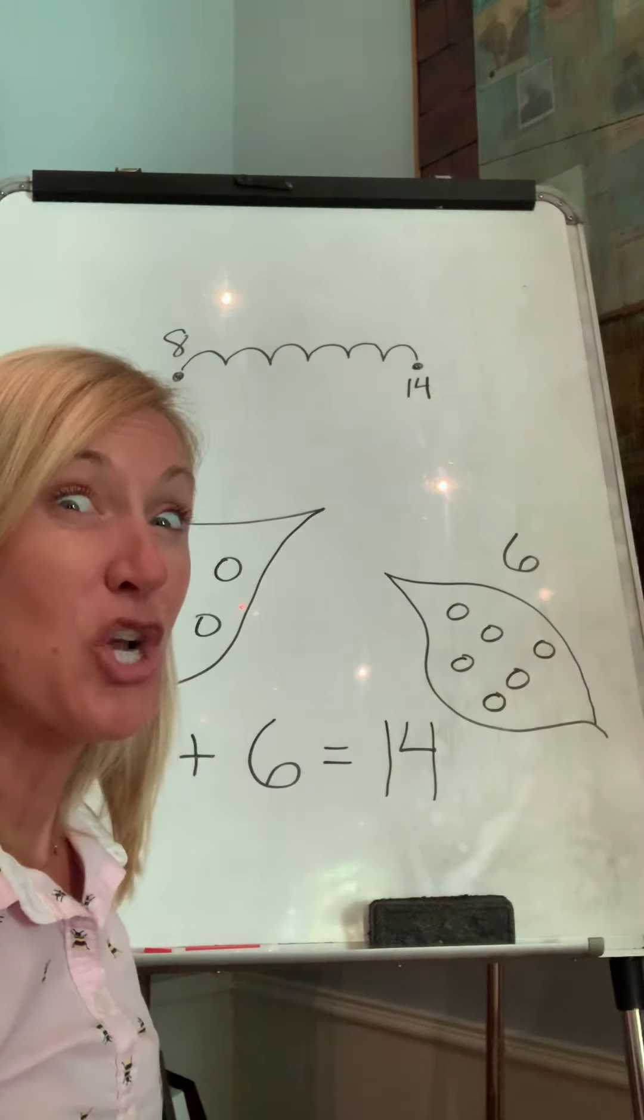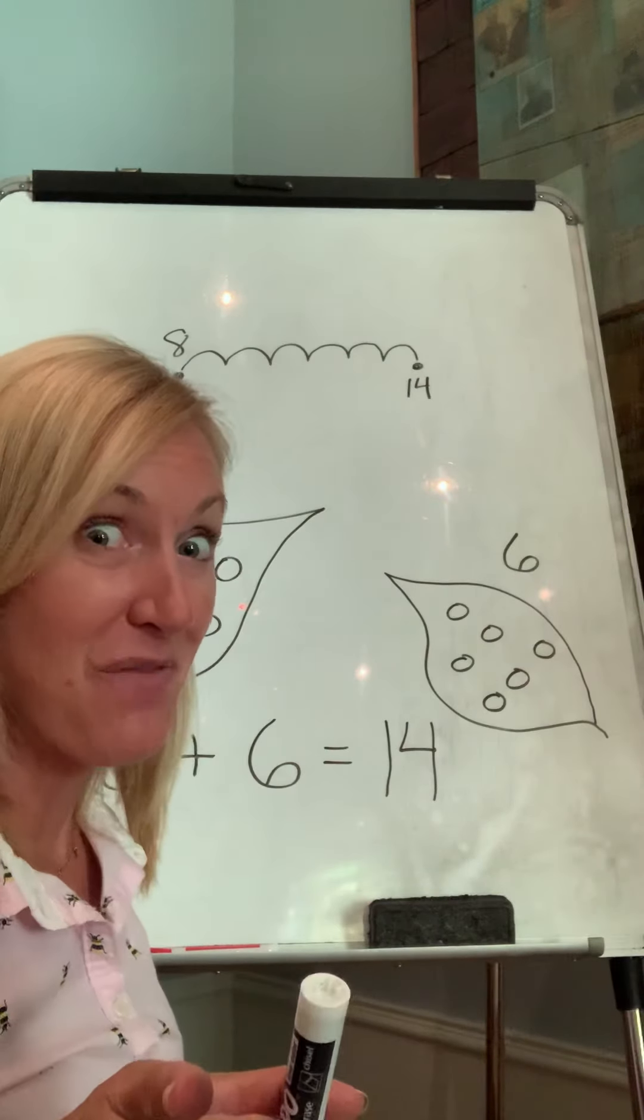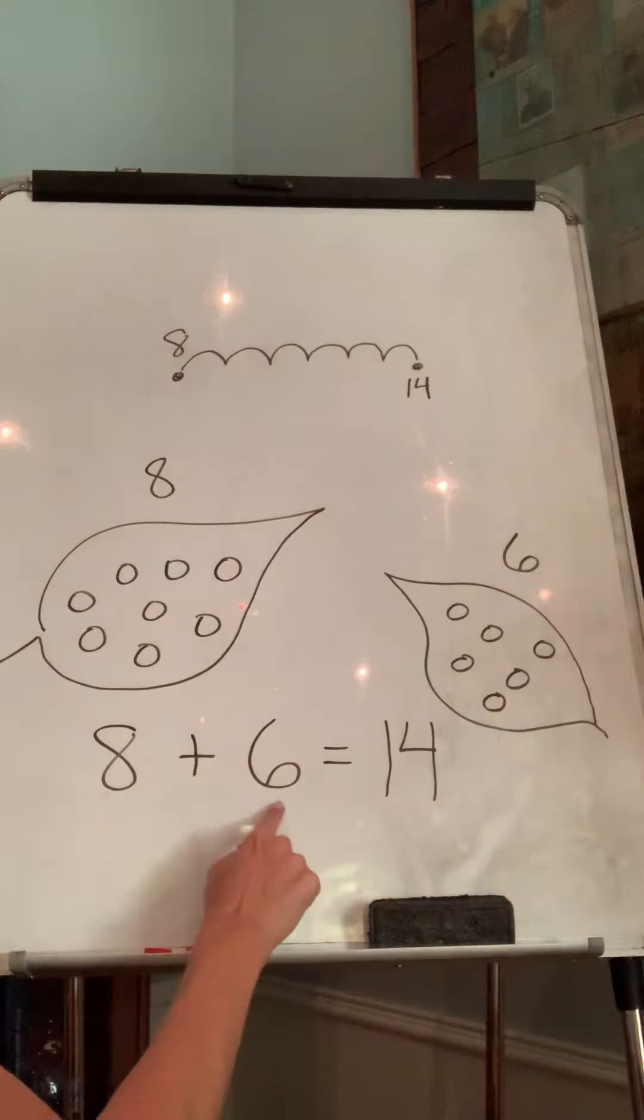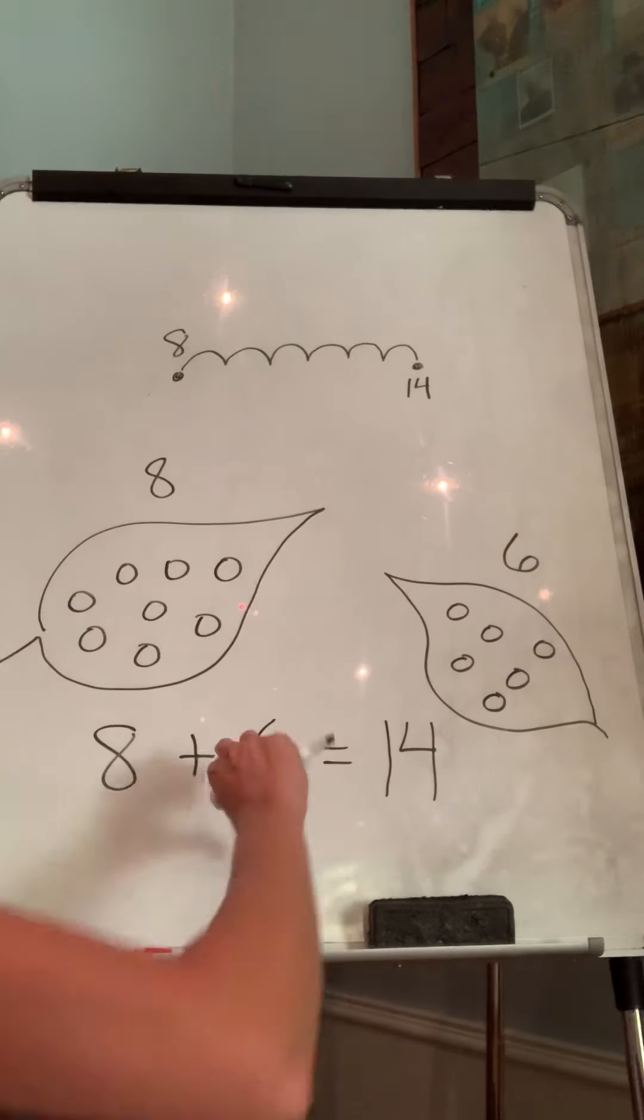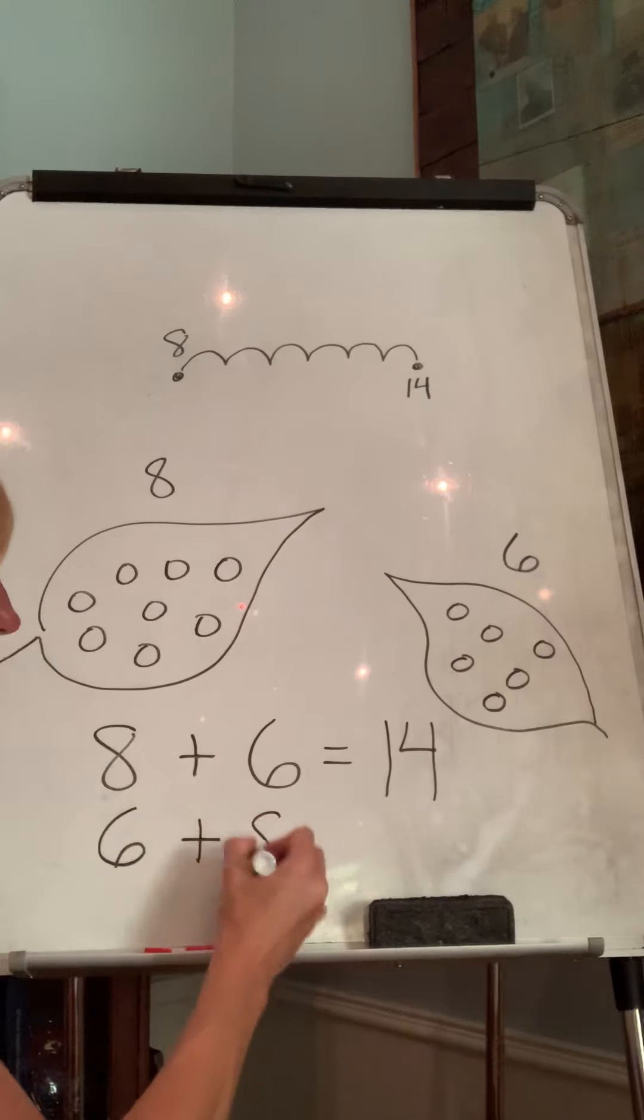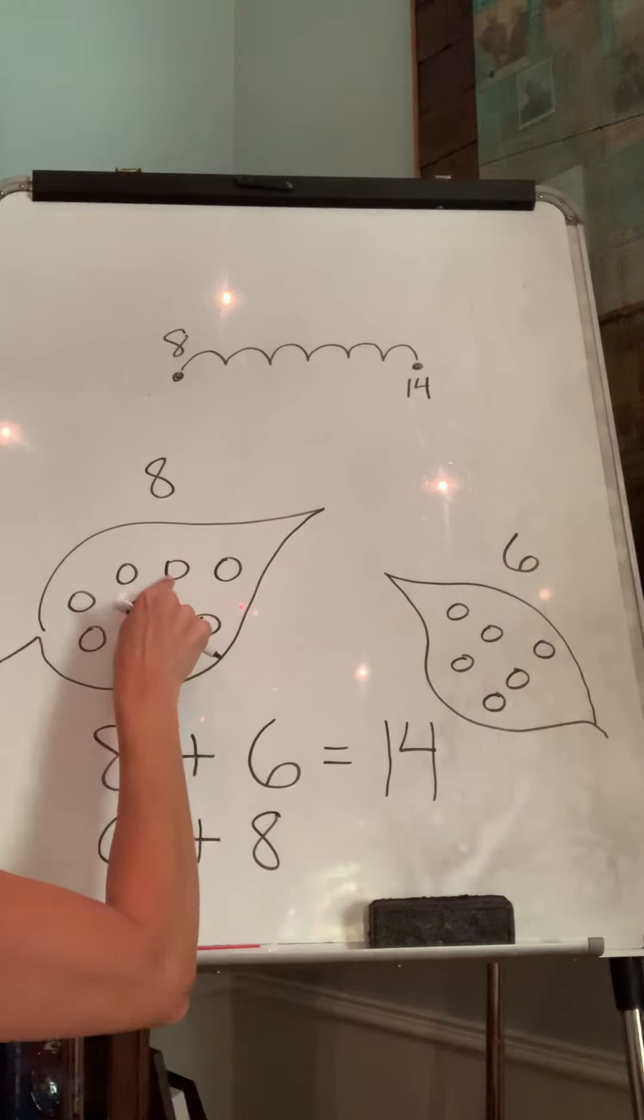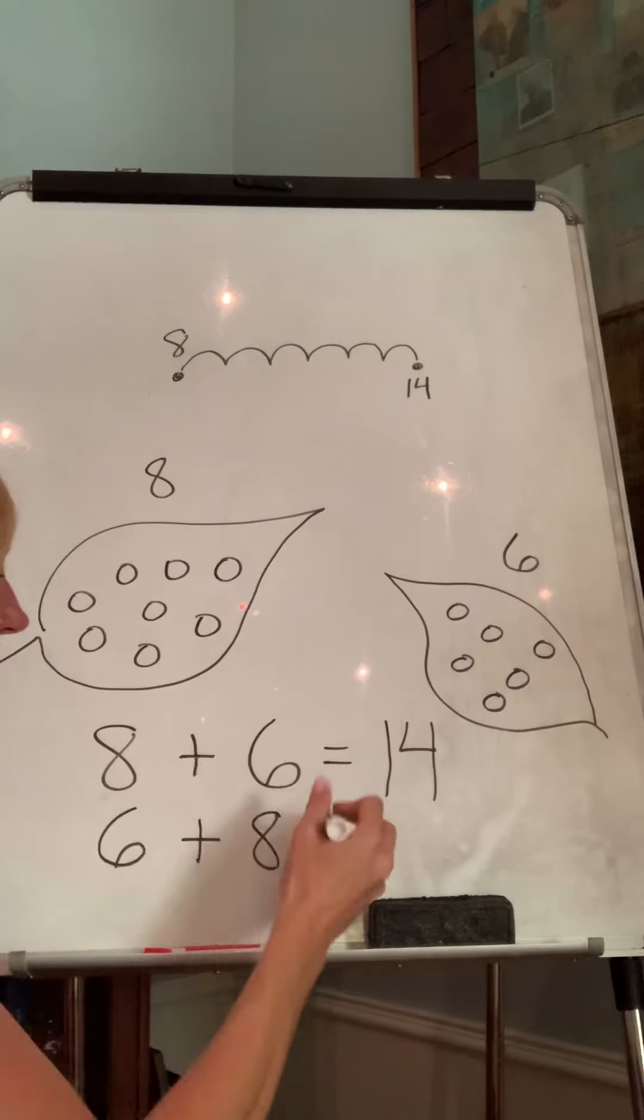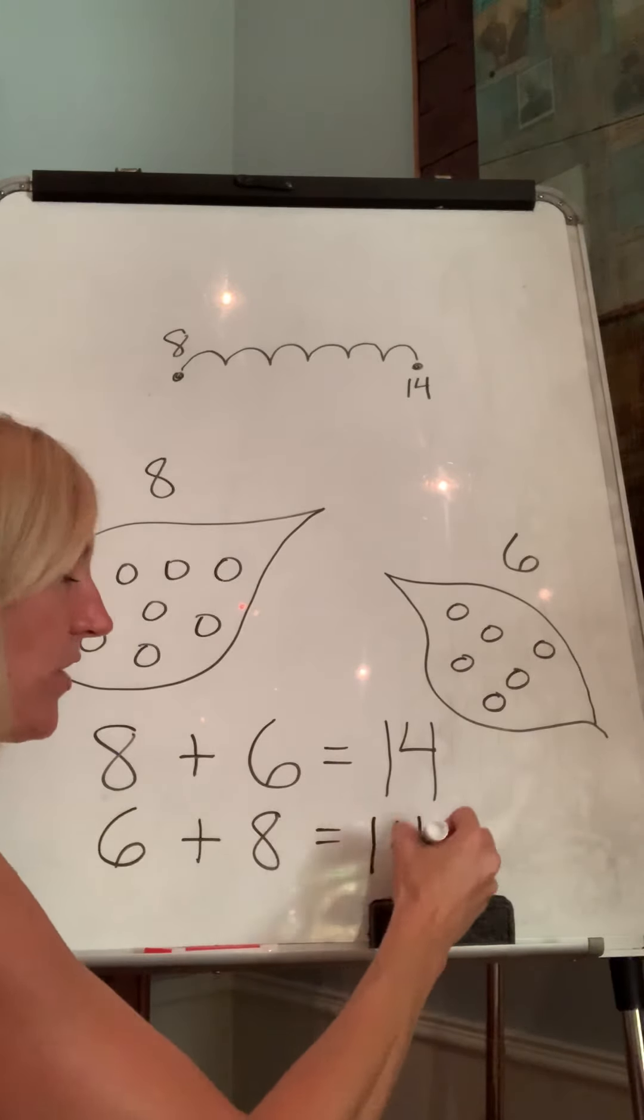Who remembers how to do the turnaround fact? See if you can write that down on your whiteboard. What's the turnaround fact? Eight plus six equals 14. Turn the numbers around. So what is six plus eight? If we started with our six, six, seven, eight, nine, 10, 11, 12, 13, 14. It's still equals 14.